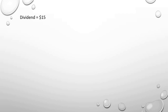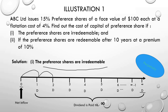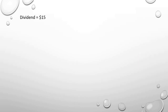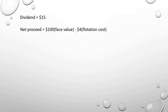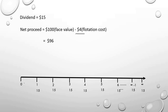The coupon rate is 15% and the face value is $100, so dividend equals 15% of 100 = $15. The shares are issued at face value with a floating cost of 4%, so the company pays $4 as floating cost and net proceeds = $96. Every year the company pays $15 dividend till infinity, and the net inflow at time zero is $96.